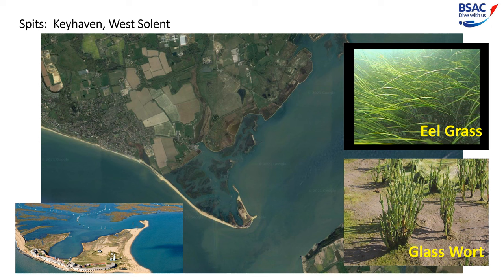Gradually, halophytes or salt-tolerant plants such as glasswort and sea blight colonise the accumulating mudflats. These plants trap more sediment and contribute organic matter when they die. These processes help salt marshes to grow. Eventually the salt marshes will grow and an even more complex set of plants will colonise the area until communities such as alder and ash trees grow to develop a creek system. This is known as vegetation succession.